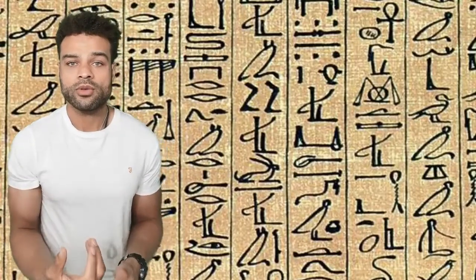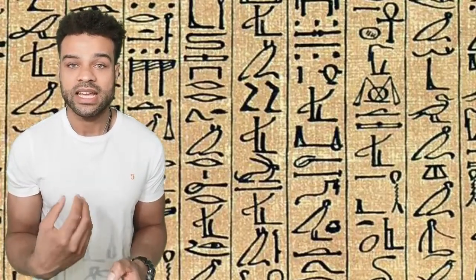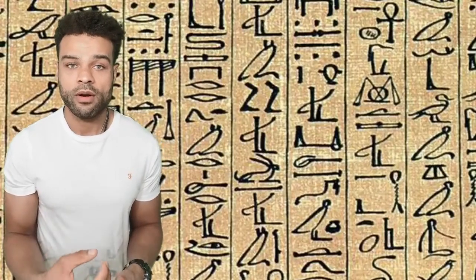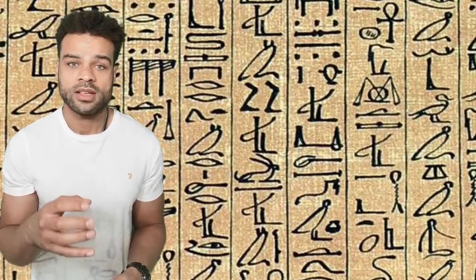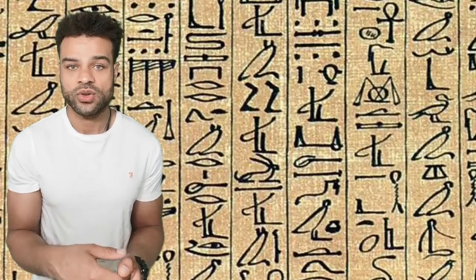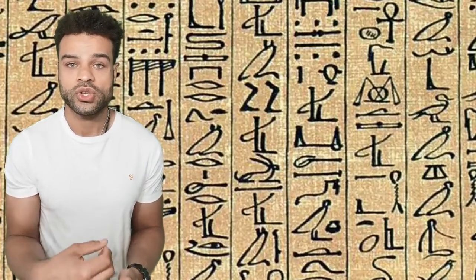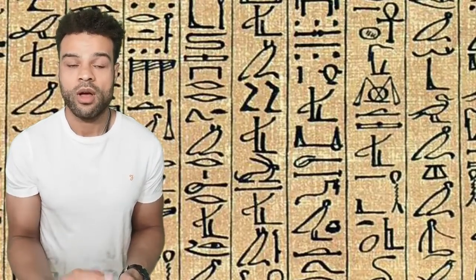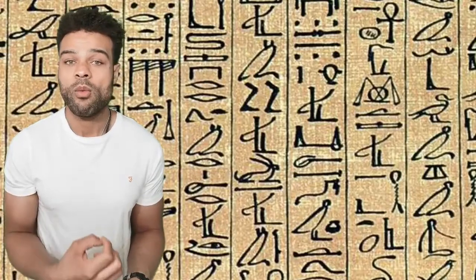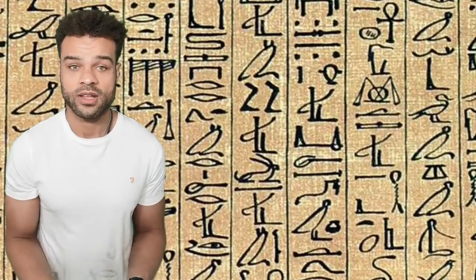Throughout the Old Kingdom, Egypt became increasingly engaged in international trade. Pharaoh Hohar succeeded Nama and extended trade links to Lebanon, 1,200 km away, and Syria, 1,500 km away.